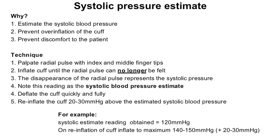It is important to accurately record the systolic pressure estimate, in order to estimate the systolic blood pressure, prevent over-inflation of the cuff, and prevent any discomfort to the patient. Locate and palpate the radial pulse using your index and middle fingertips. Inflate the cuff until the radial pulse can no longer be felt — the disappearance of the radial pulse represents the systolic pressure. Note this reading as the systolic blood pressure estimate. Deflate the cuff quickly and fully. Re-inflate the cuff 20–30 mmHg above the estimated systolic blood pressure. For example, if you obtained a systolic estimate reading of 120 mmHg, on re-inflation you would need to inflate the cuff to a maximum of 140–150 mmHg.